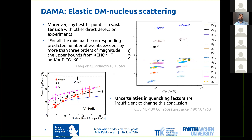However, there's a much bigger problem with the DAMA interpretation, which is that any best-fit point in terms of dark matter-nucleus scattering is in vast tension with other direct detection experiments. In a paper from late last year, they looked at essentially the most general set of non-relativistic operators describing elastic dark matter-nucleus scattering. And they write in the conclusions that for all the minima, the corresponding predicted number of events exceeds by more than three orders of magnitude the upper bound from XENON1T and/or PICO-60. So this is essentially saying that there is no known consistent interpretation in terms of elastic dark matter-nucleus scattering.